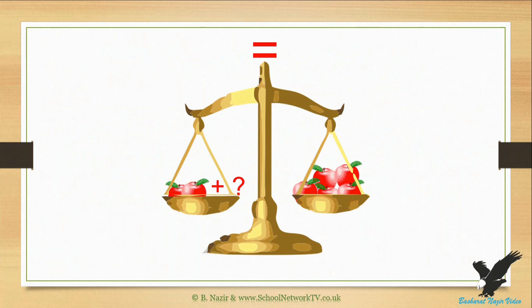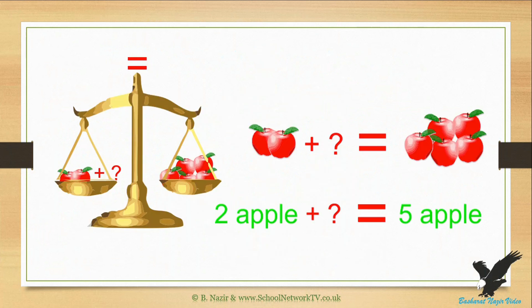So the question mark can be replaced by three apples. The scales can be left out because the equal sign tells us that both sides must be balanced. On the right of this diagram we have replaced the scales by an equation. We have on the left two apples and on the right we have five apples, so both sides are not equal. To balance both sides we have to add three apples to the left side, so the answer to the question mark is three.